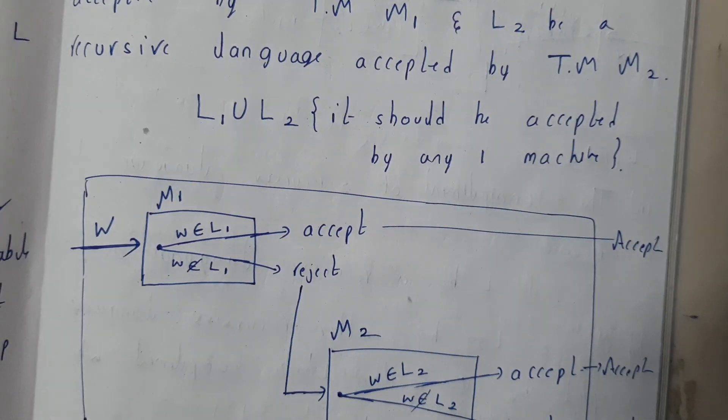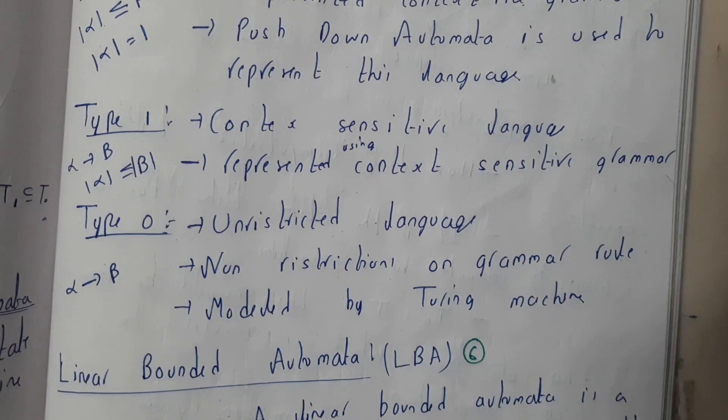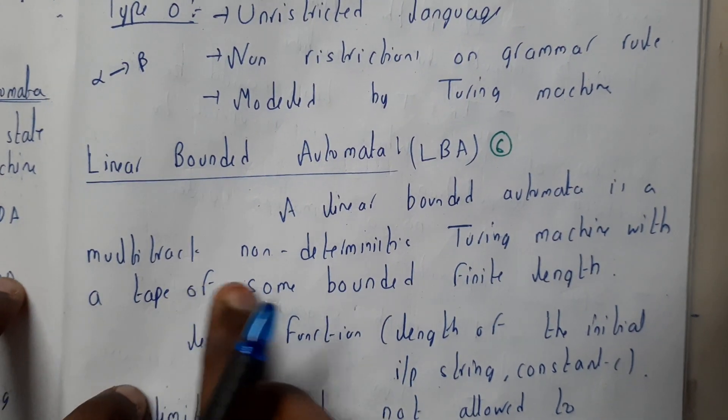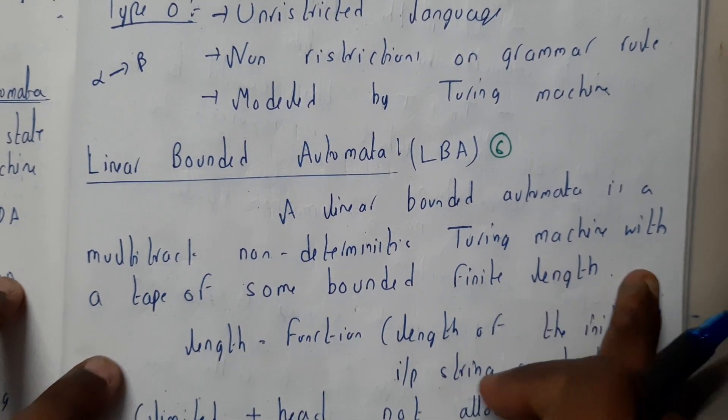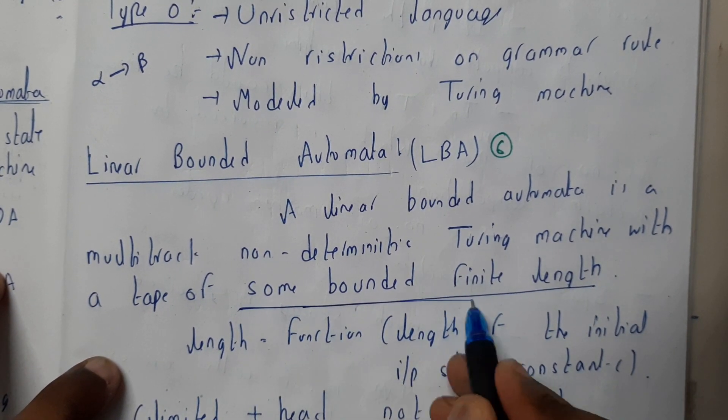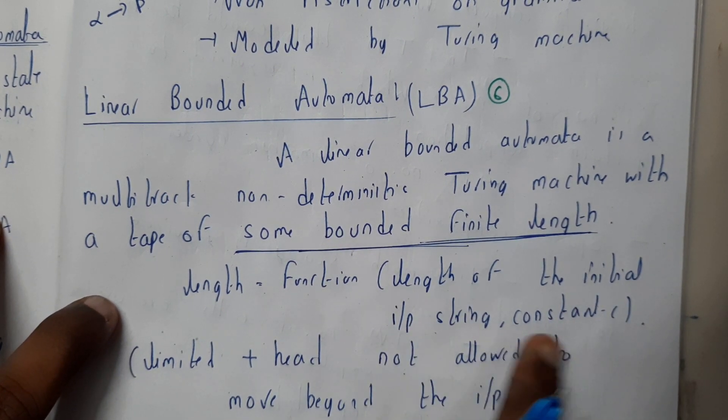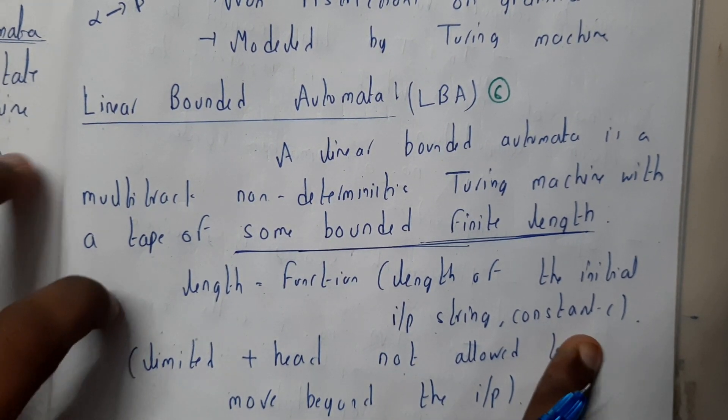The exact definition: a linear bounded automata is a multi-track non-deterministic Turing machine with a tape of some bounded finite length. Here there is a fixed length - length equals function of length of initial input string with some constant.